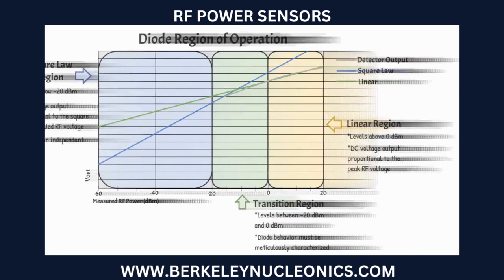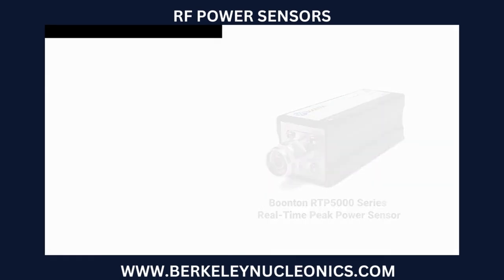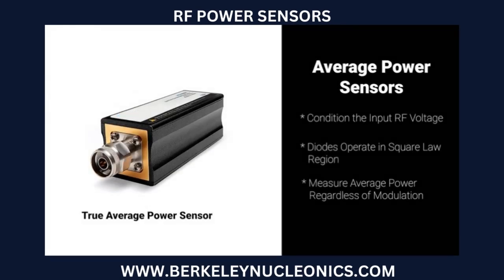Peak power sensors use a low impedance load across the smoothing capacitors to discharge them very quickly when the RF amplitude drops. This, in combination with a very small smoothing capacitance, allows peak power sensors to achieve fast rise times and wide video bandwidths.